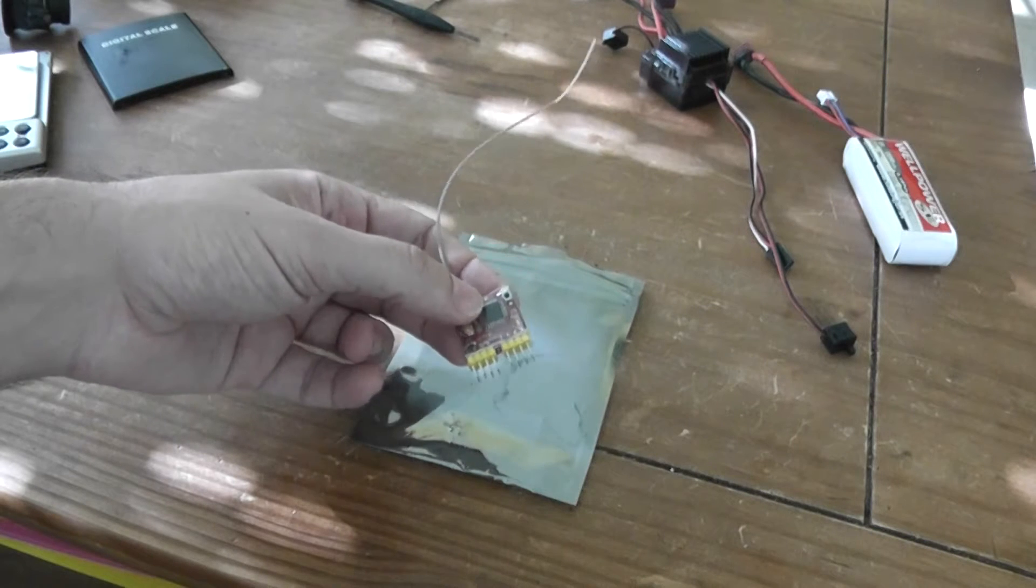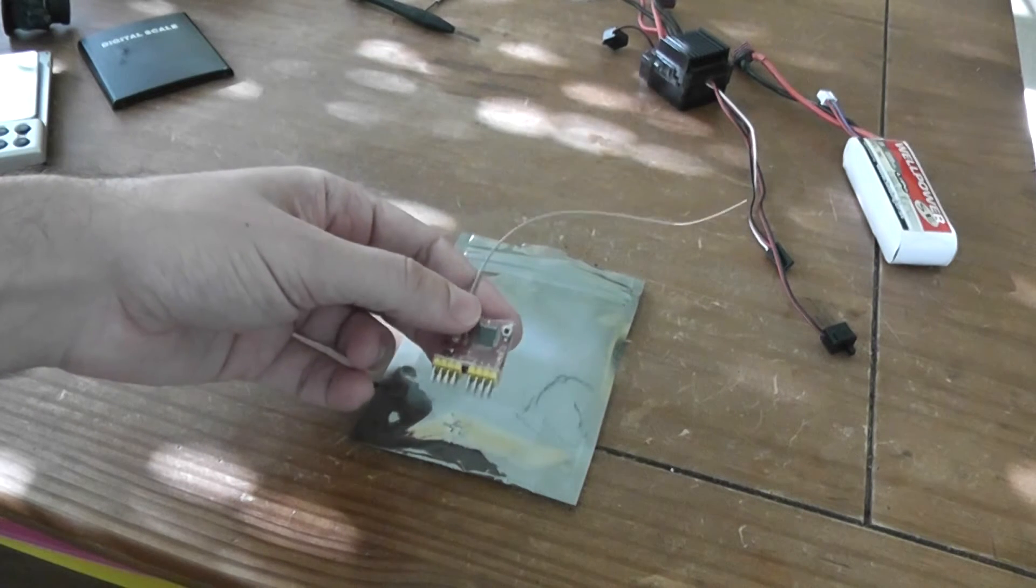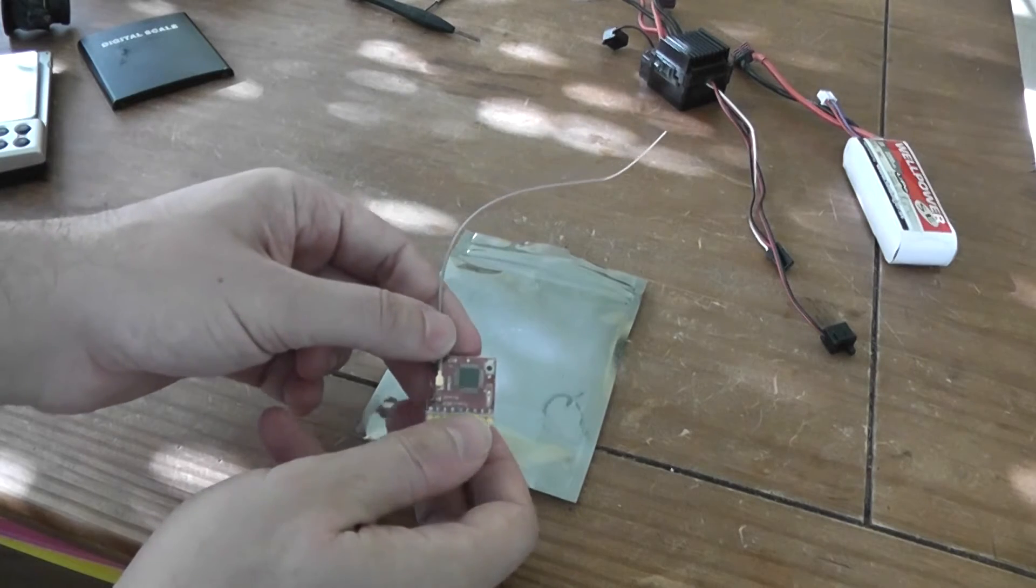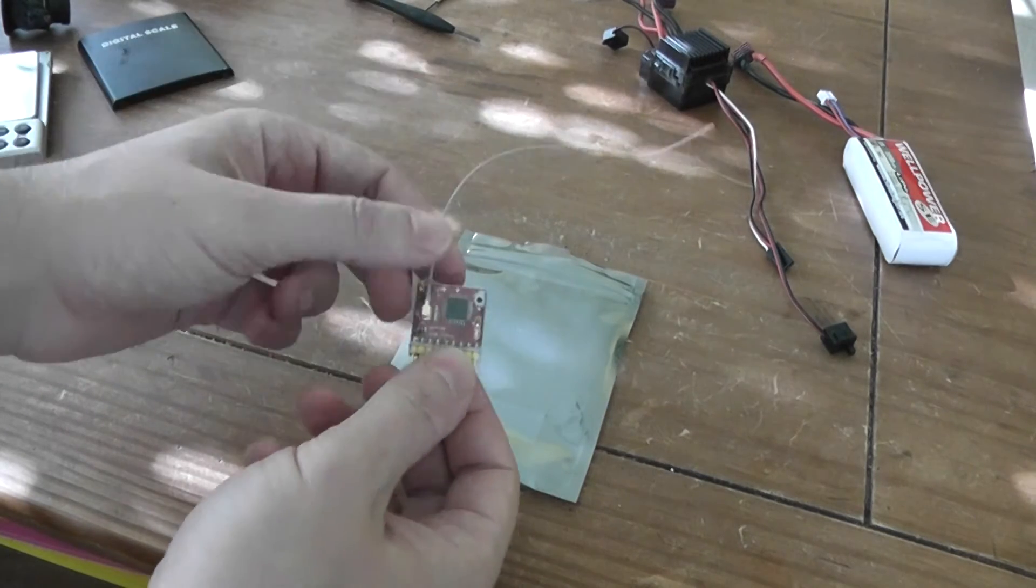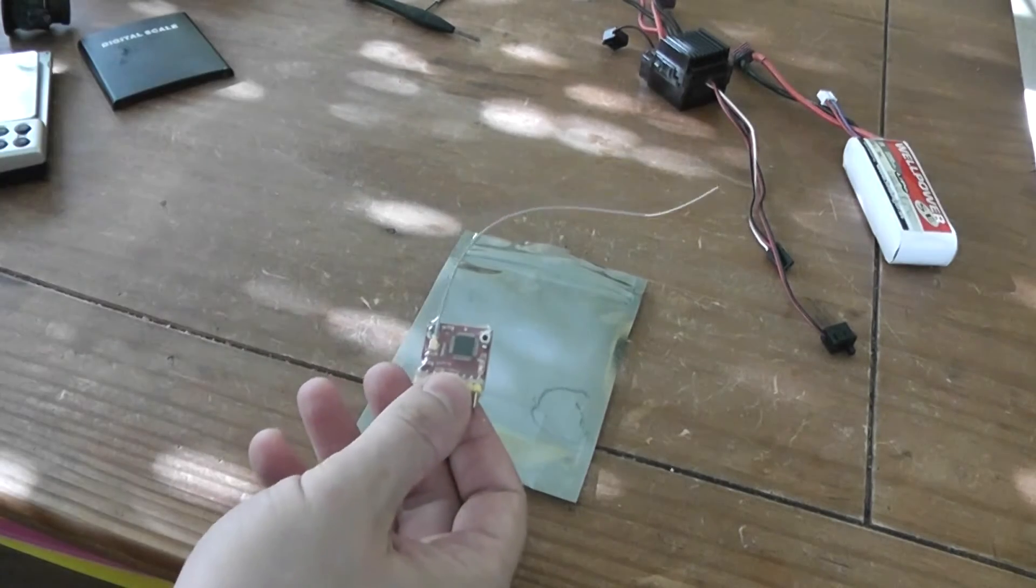So this is a FrSky receiver, three times cheaper than the D4R2 for example. It's not offering the diversity antenna, but it's announced to be also very efficient.